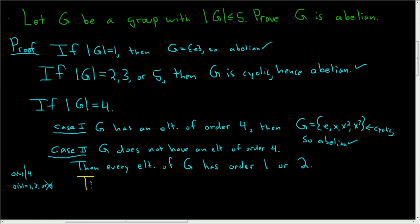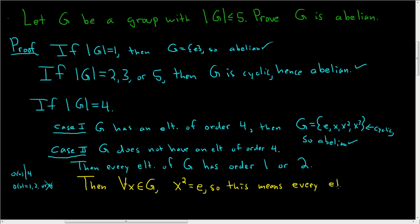This means that for all X in G, X² = E. Because if an element has order 1 it's the identity, and the identity squared is E; if it has order 2, then X² = E by definition. So every element is its own inverse.